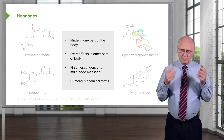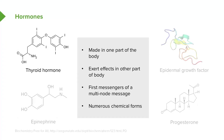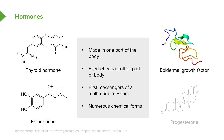Hormones come in a variety of forms. Thyroid hormone is produced by the thyroid gland and has iodines attached to it — it's about the only molecule in the body that contains iodine. Epinephrine is also known as adrenaline and is used in what we call the fight-or-flight response. Epidermal growth factor is a very different molecule — it's actually a protein — and it helps the body regulate its growth. Finally, the sex hormone progesterone is important as a precursor of other hormones and exerts effects related to pregnancy.